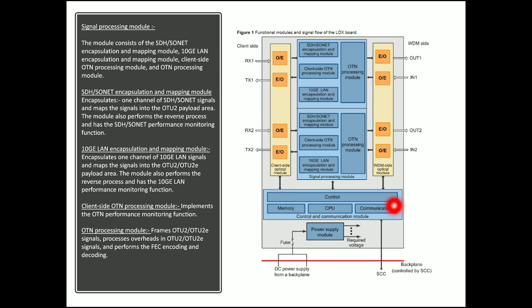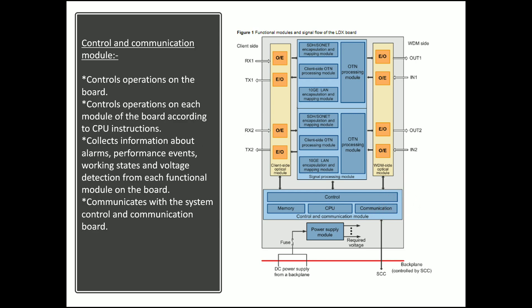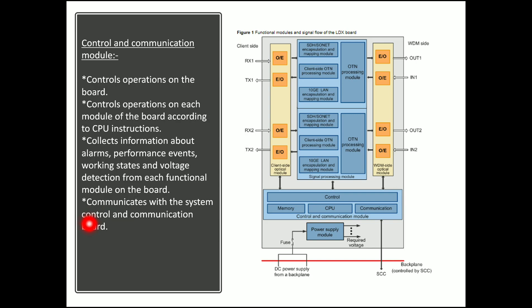Next is the control and communication module. This module is connected to the WDM side optical module, client side optical module, and signal processing module, and works via the backplane with the SCC system control and communication board. Its functions include: controlling operations on each module of the board according to CPU instructions, collecting information about alarms, performance, events, working state, and voltage detection from each functional module, and communicating with the system control and communication board via the backplane.